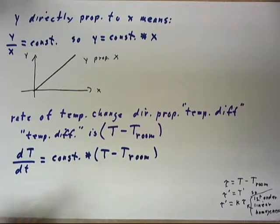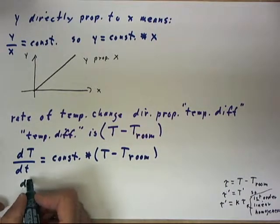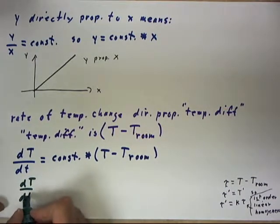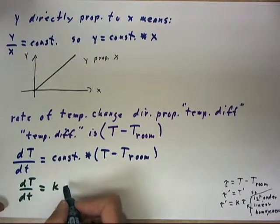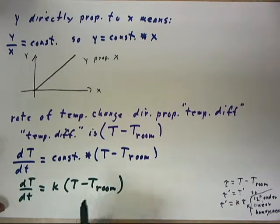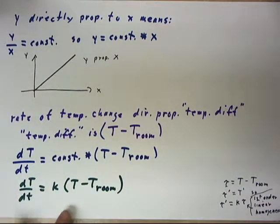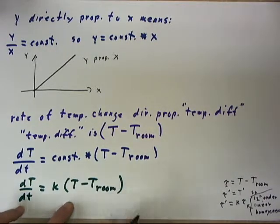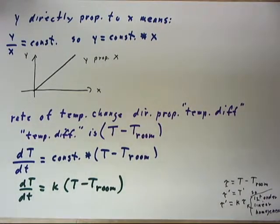Now, traditionally, we'll let this constant be represented by the letter K. So we're going to say that this is the case if, for some constant number K, we have this equation, which we see is the differential equation. It's first order linear and it's non-homogeneous. So this is a perfectly good equation.